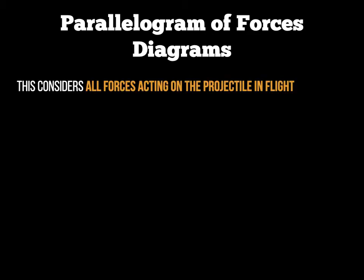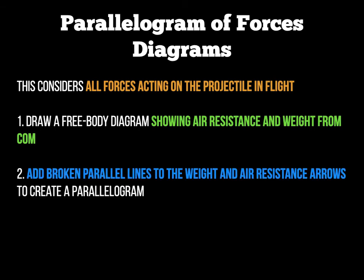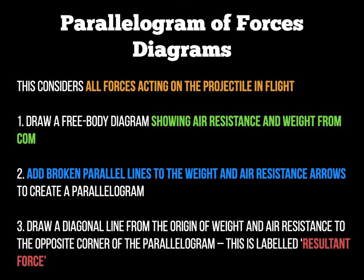The final diagram we're looking at in this screencast is what we call the parallelogram of forces, also known as a resultant force diagram. In this diagram we think about all the forces acting on the projectile in flight. We start off by drawing a free body diagram first. We show air resistance and weight, then add broken parallel dotted lines, and finally draw a diagonal line from the origin of weight and air resistance labelled resultant force. Please note: if you're asked to draw a free body diagram, do not draw a parallelogram of forces on top of it. This is a separate diagram that needs to be drawn on its own.